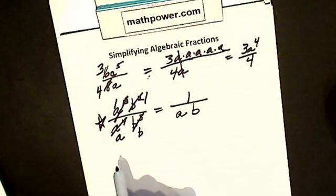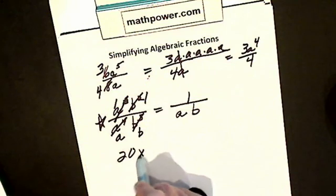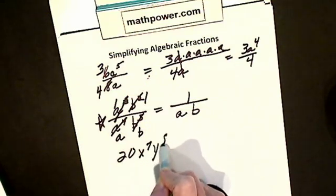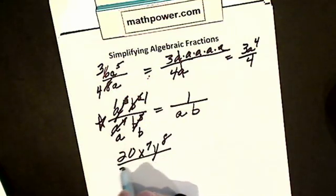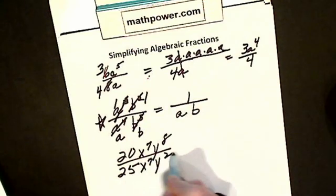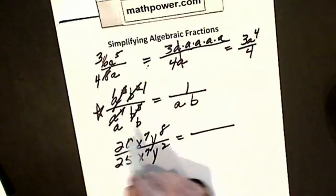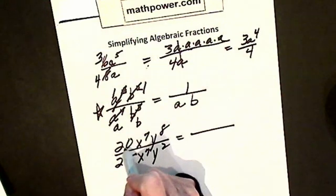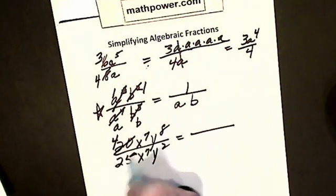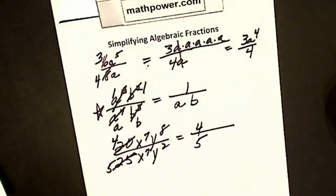Alright, let's try another one. Let's say I have 20x to the 7th y to the 8th divided by 25x to the 7th y squared. I simplify my numbers. So I am going to have 5 into 20 is 4, 5 into 25 is 5. So I get my 4 fifths.